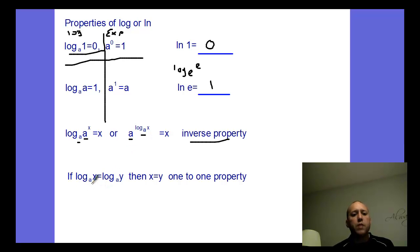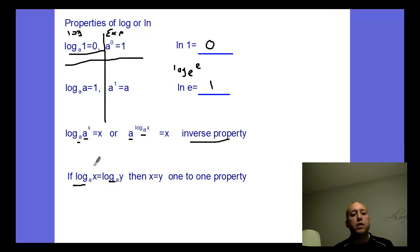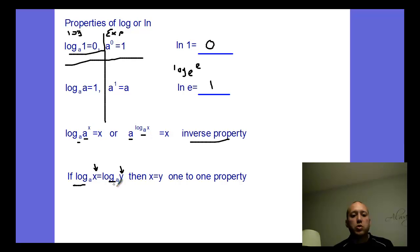The one-to-one property of logs: if log base a of x equals log base a of y, then x equals y. If you can make them the same logs with the same base, then the other portion has to be equivalent. It's like the one-to-one property of exponents, just using logs.